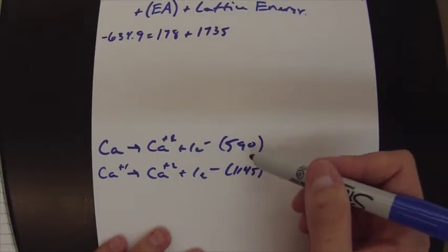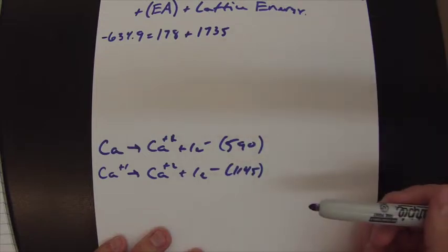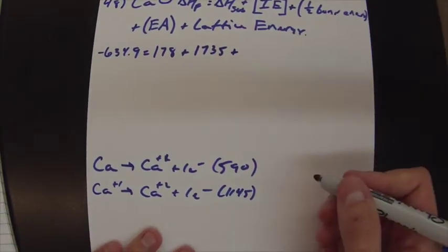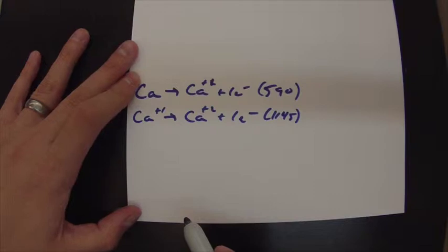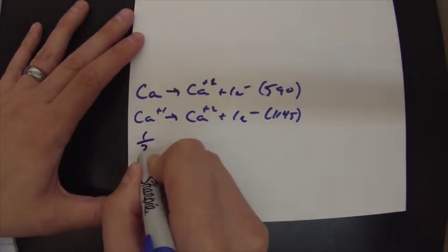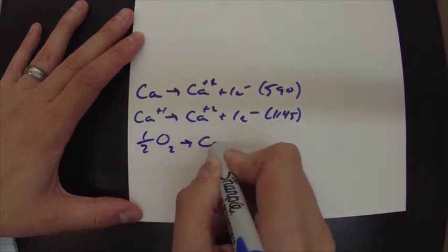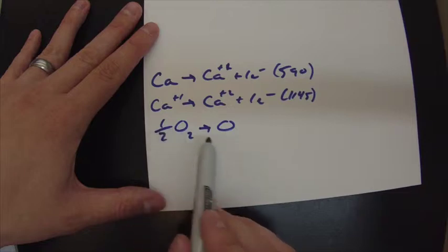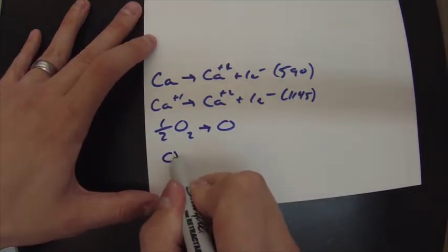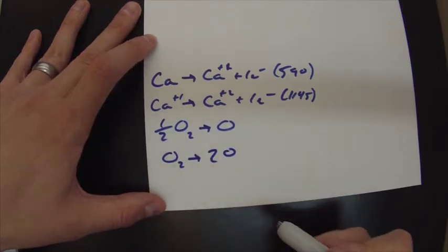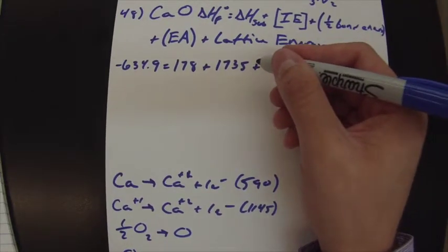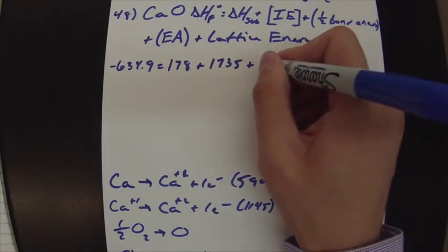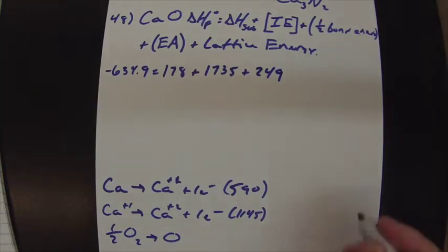And you sum those and get your 1735 plus half of the bond energy. And it's half of the bond energy, again, I'll come down here and show you, because we only need one oxygen. And the bond energy is, we're doing this. We're doing this. And since we're only doing half of it, it's half of the bond energy. So this would have a bond energy of 498, it tells you. But since we're only doing half of it up here, you just add in 249.